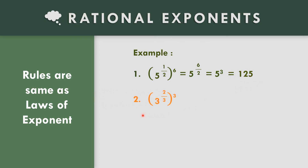How about number two? The quantity three raised to two-thirds, raised to the third power. Copy the base three, multiply two-thirds times three: that is six over three, which equals two. Three squared is three times three, and the answer is equal to nine.